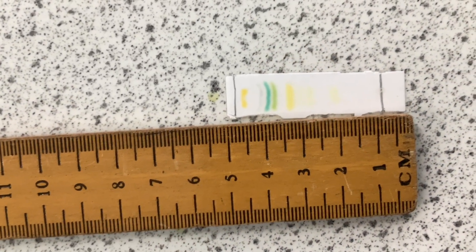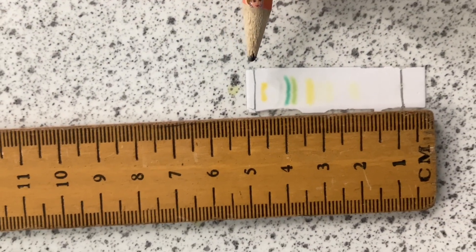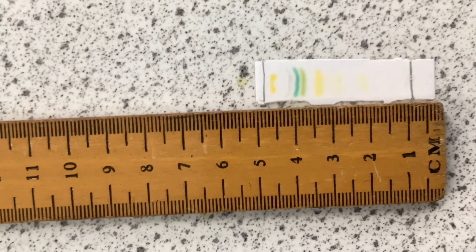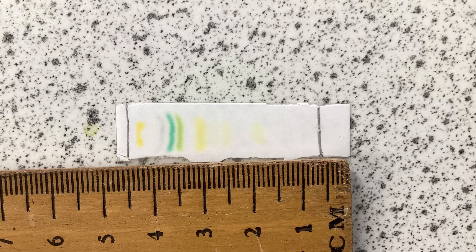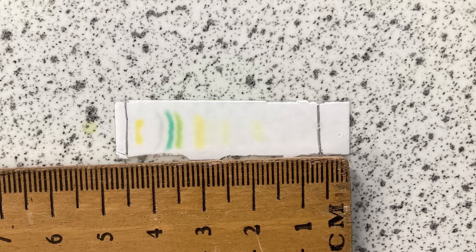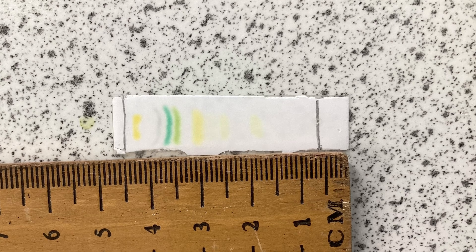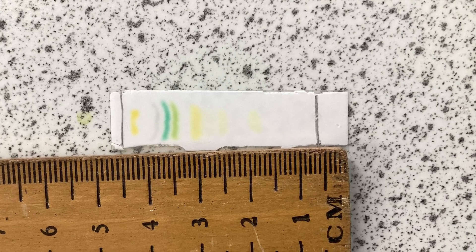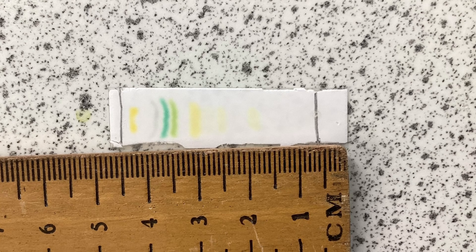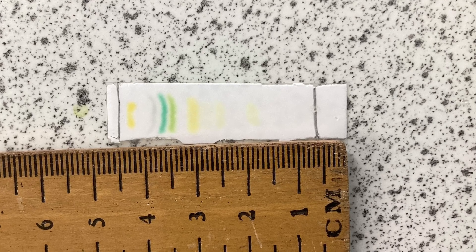As you can see here, I've now drawn with a pencil line the solvent front, and that will help us calculate our RF values. To calculate the RF value, you need to measure the distance from the starting line to each of the individual pigment lines. You then divide each of those values by the distance between the starting line and the solvent front. This will give you an RF value between 0 and 1, and can be used to work out each of the different pigments that you have inside your leaf.